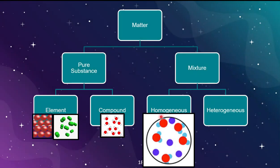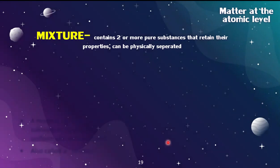A mixture can be further classified as homogeneous or heterogeneous. In a homogeneous mixture, you can see elements and compounds that appear uniformly distributed — for example, purple circles representing a monatomic element and red-blue overlapping circles representing a compound. The uniform distribution of substances in the picture allows it to be classified as a homogeneous mixture. In a mixture, the pure substances retain their chemical properties because they're not chemically combined, and they can also be physically separated.